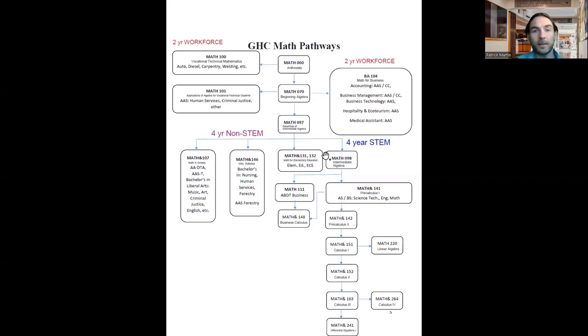If you placed into Math 60 and your goal is an associate degree in human services, you can take Math 60, 70, and then Math 101 Applications of Algebra for Vocational Technical Students. It is best to complete your math requirements in your first year of college if possible, so please start your math classes early and take math each term until you reach your last class.